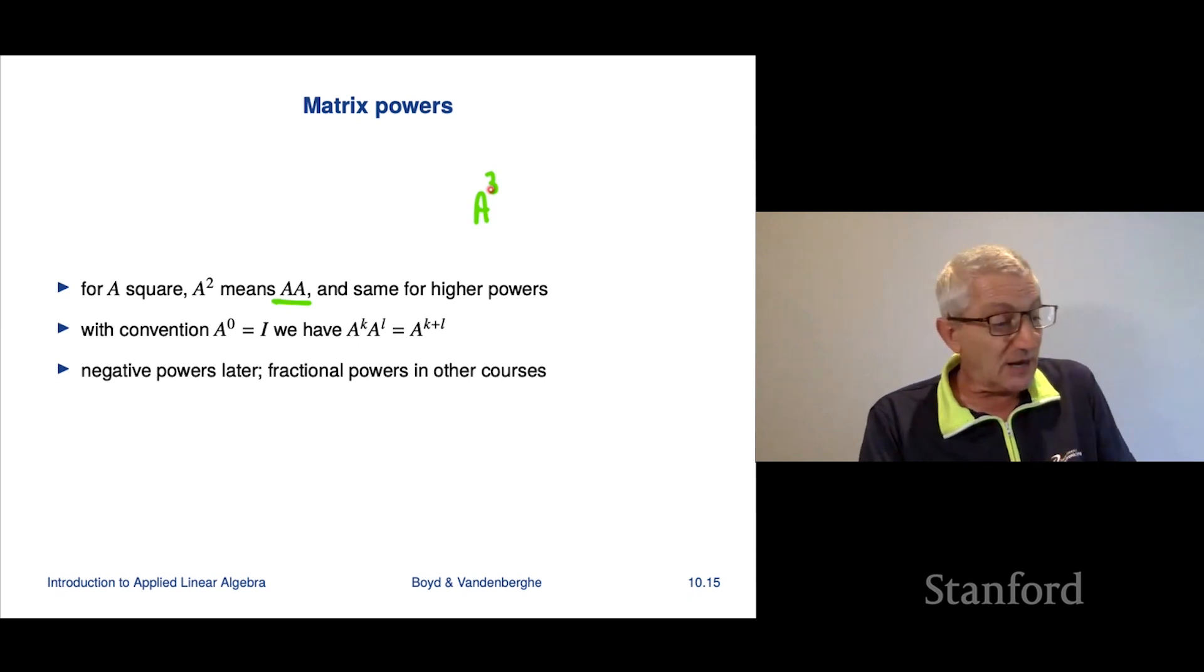Now notice here that we're doing some overloading of notation again because if someone walks up to you on the street and says A cubed and A is a number, then you know what it is. It's the cube of the number. You multiply the number by itself three times, right? But here we're doing the same thing except A is a matrix. But again, makes perfect sense. So these are the matrix powers.